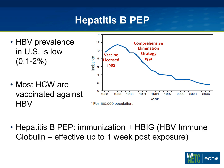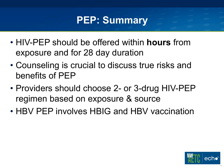Just a couple of slides on hepatitis B before we finish. Hepatitis B PEP is not something we think about very often. First, the hepatitis B prevalence is rather low in the U.S. — it's another vaccine success story. The comprehensive elimination strategy started in 1991, which now includes hepatitis B vaccination in the childhood immunization schedule, has brought the incidence very low, and most cases are actually imported. Most healthcare workers are vaccinated and therefore protected. But if an exposure does occur with an unvaccinated healthcare worker or somebody who did not respond to the vaccine, the PEP we use is to immunize them with their first dose as soon as possible and give hepatitis B immune globulin. The nice news is that this is effective up to a week after exposure, so you don't have to get that first dose in right away.